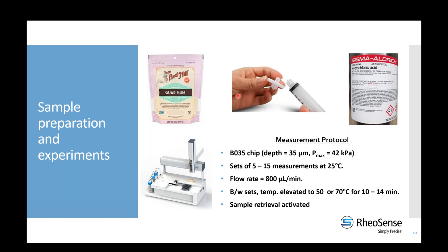Measurements were carried out at room temperature, 25°C. Between each set of 5 to 15 segments, the temperature was elevated to either 50°C or 70°C for about 10 to 14 minutes to degrade the guar gum, then dropped back to 25°C for the next set of measurements, then elevated again — rinse and repeat. The Initium automatically made all these measurements over many hours. We used the sample retrieval function so that all measurements could be performed with only one loaded volume.